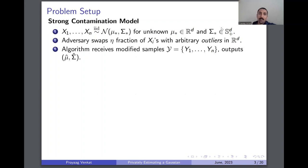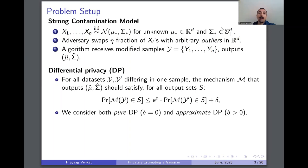The specific model of robustness we consider is the strong contamination model. In this model, as before, n iid samples are drawn from some unknown Gaussian distribution. However, an adversary then swaps up to an eta fraction of these data points arbitrarily and replaces them with arbitrary outliers. The algorithm then receives this modified set of samples y equal to y1 up to yn and outputs estimates mu hat and sigma hat.